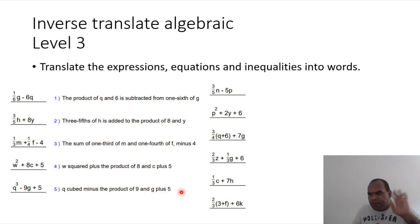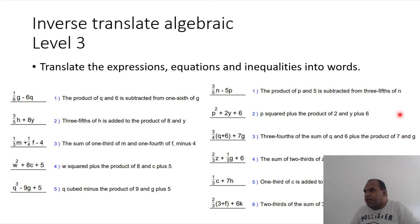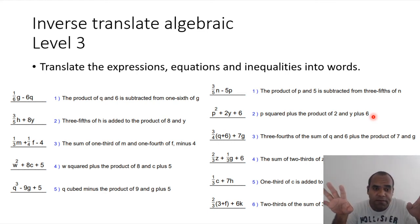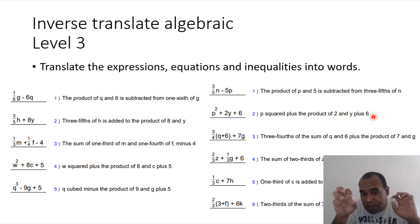'The product of p and five is subtracted from three-fifths of n' — turn-around phrase, three-fifths of n. 'p squared plus the product of two and y, plus six.' Easy — just plus, plus, plus. Can I just use 'plus'? Yes, but I'm showing you all kinds of words we can use for plus: 'added,' 'increased by.' You need to understand the ideas for addition, subtraction, multiplication, division.